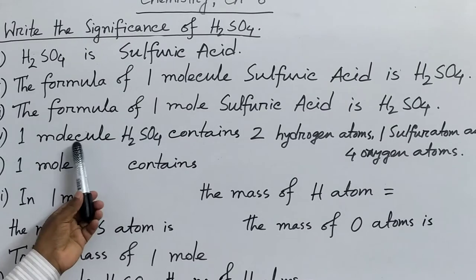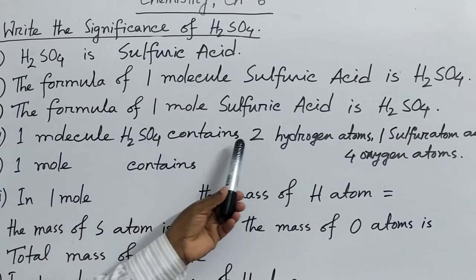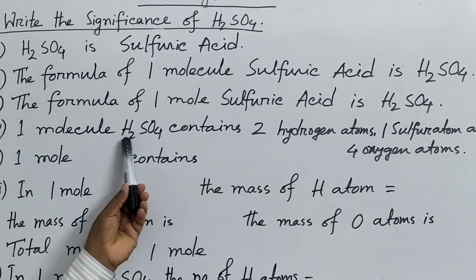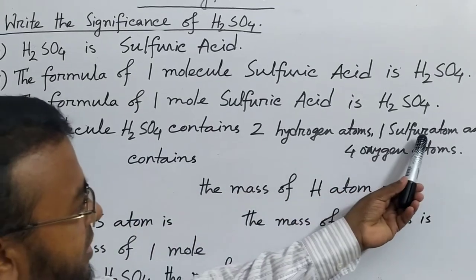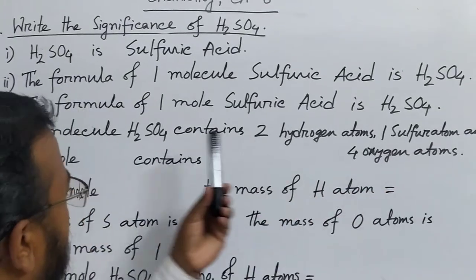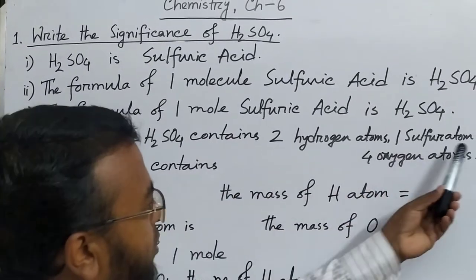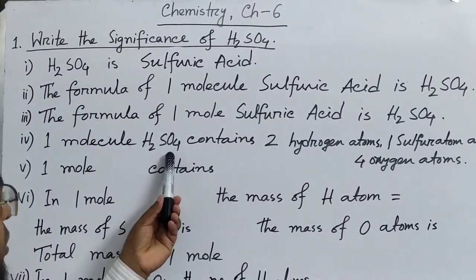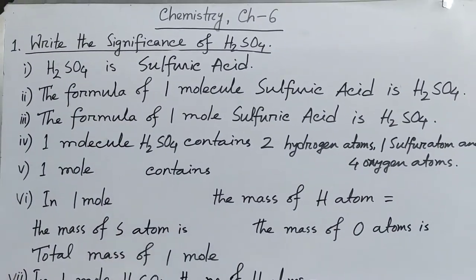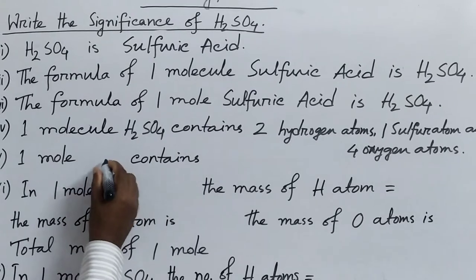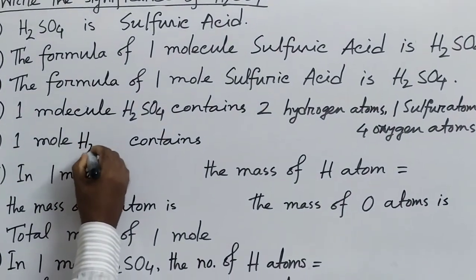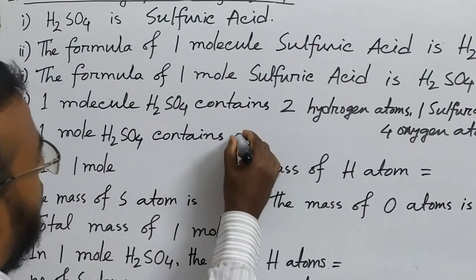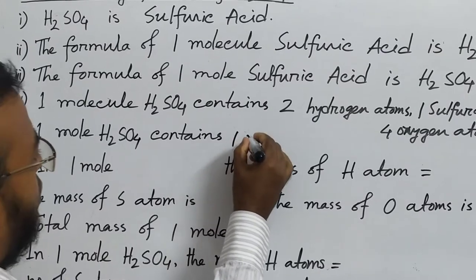So by seeing the formula, we can easily write: one molecule of sulfuric acid contains two hydrogen atoms, one sulfur atom, and four oxygen atoms. Now, one mole of H2SO4 contains two moles of hydrogen, one mole of sulfur, and four moles of oxygen.